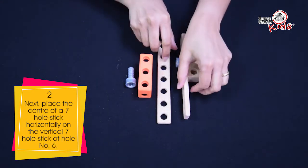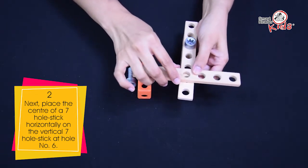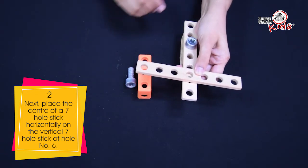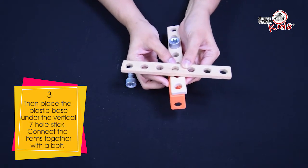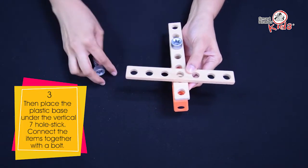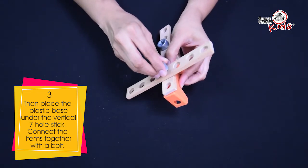Next, place the center of a 7-hole stick horizontally on the vertical 7-hole stick at hole number 6. Then, place the plastic base under the vertical 7-hole stick. Connect the items together with a bolt.